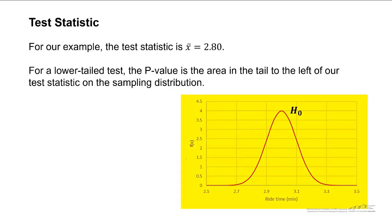Here we've got our null hypothesis, our sampling distribution. So oftentimes we label this with H0. For our example, the test statistic was x-bar equals 2.80. This is going to be a lower-tailed test because our alternate hypothesis is that the mean is less than three.